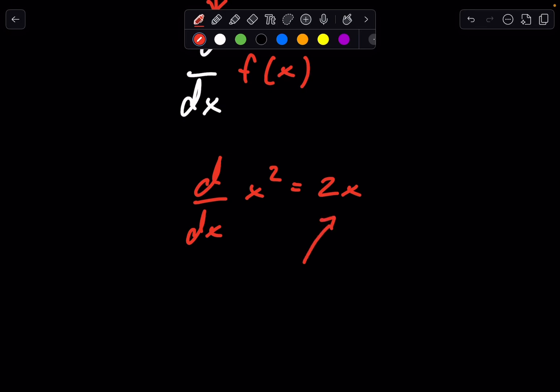Commonly in traditional calculus, we're taught that the normal derivative, d/dx of some function f(x), tells us the rate of change of f(x) at a given x. So, for example, I'm sure all of you know d/dx of x^2 would just be 2x. So that means at the point x equals 2, for example, the slope of the tangent line would be 2 times 2, which is 4, just like that.